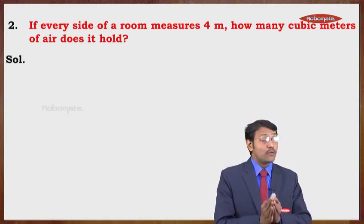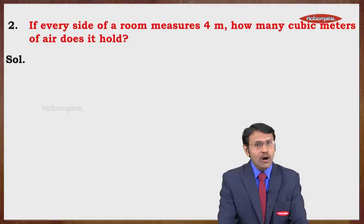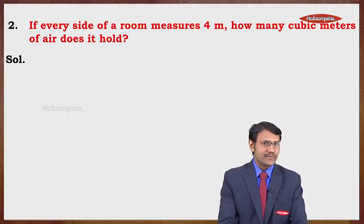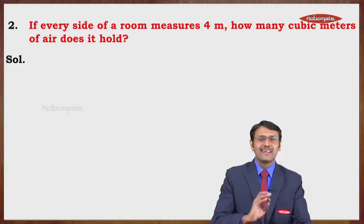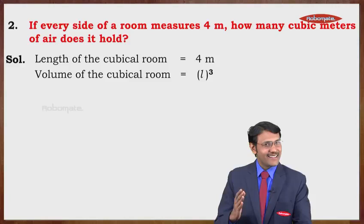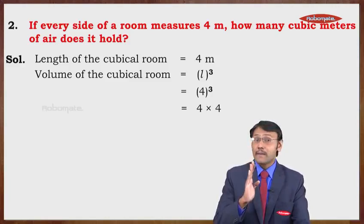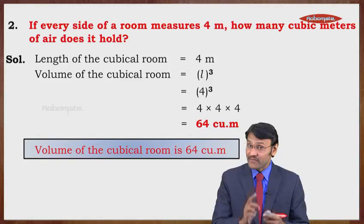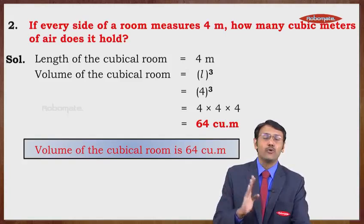Now: if every side of a room measures 4 meters, then how many cubic meters of air does it hold? We need to find the volume, because we need to find the capacity of the room. The capacity is volume, and the formula is L³. Length of the cubical room is 4 meters, so volume = 4 × 4 × 4 = 64 cubic meters. Therefore, the volume of the cubical room is 64 cubic meters.